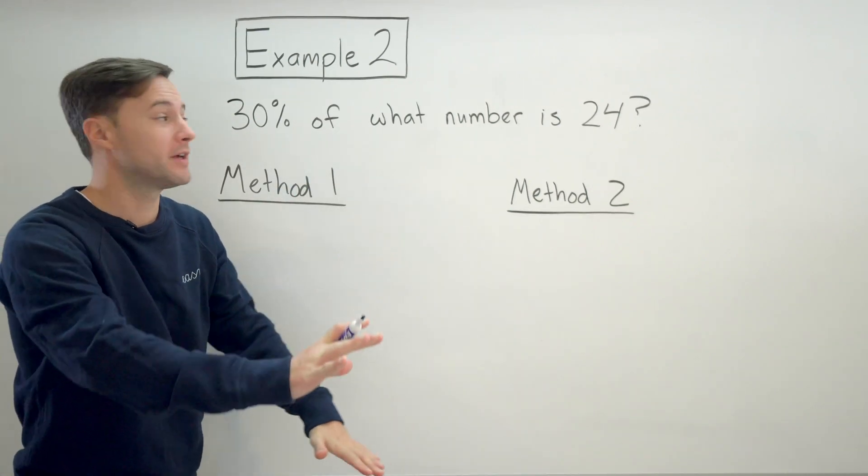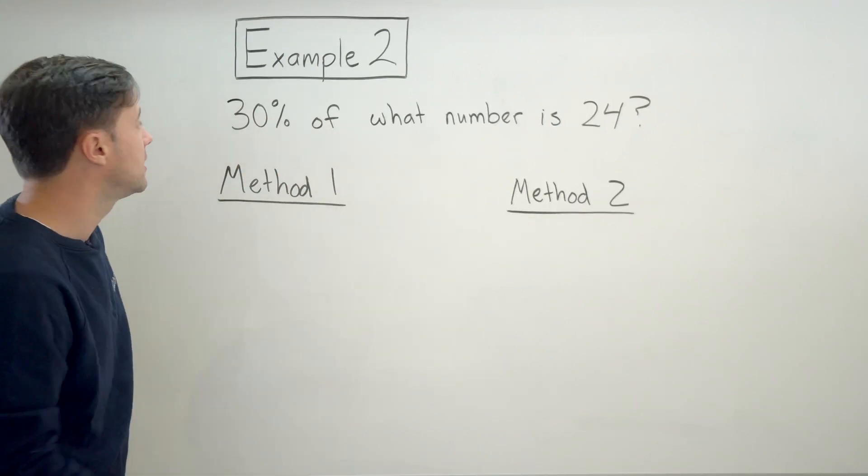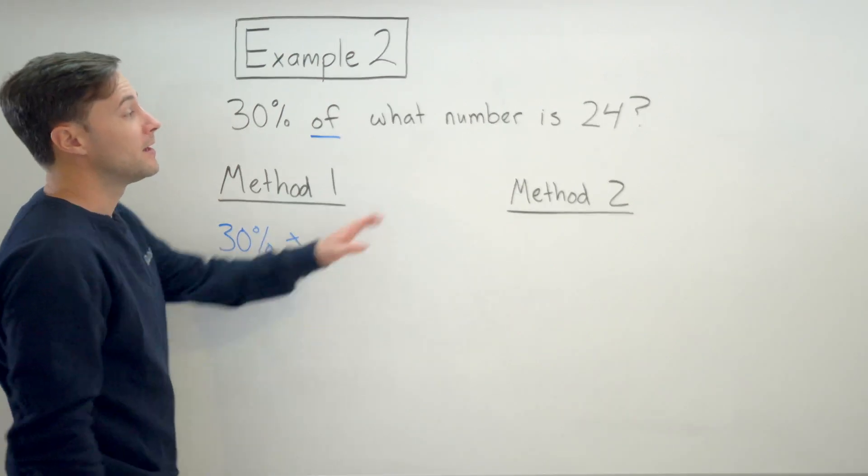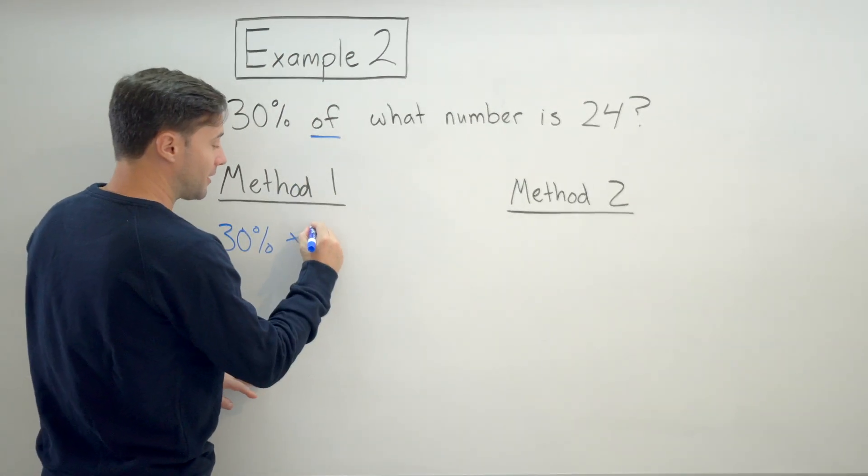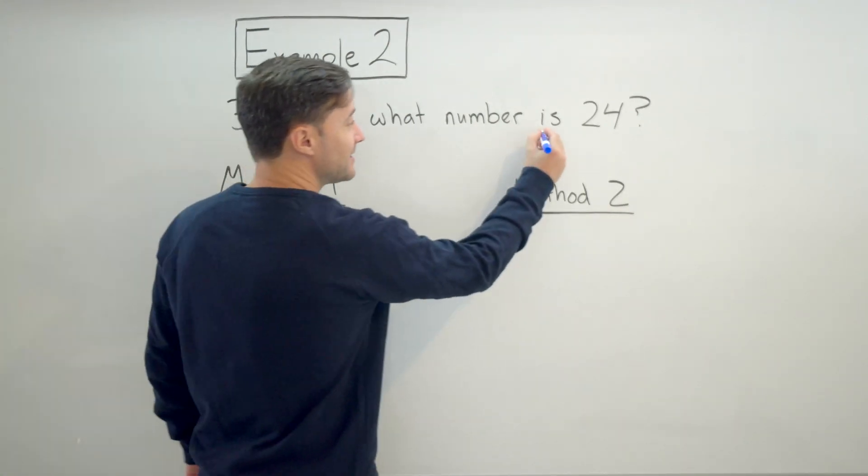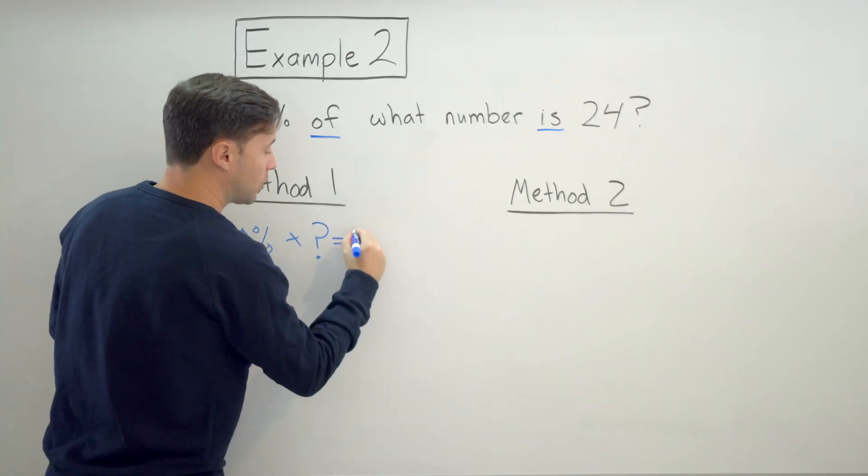The first one, same type of thing, we're going to use the keywords. So I'm going to start with 30% times what number. So I'm going to put just like last time put the question mark. Is, that's that equals sign, and is 24.